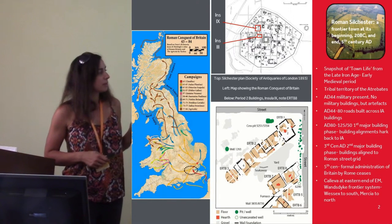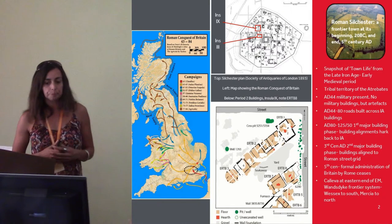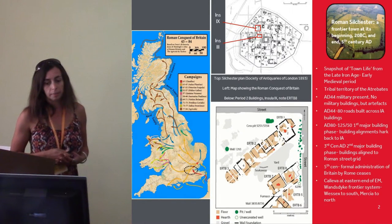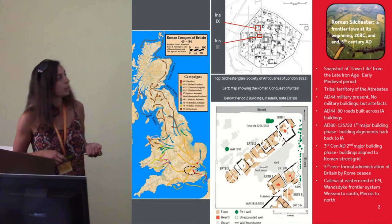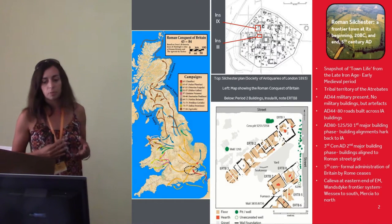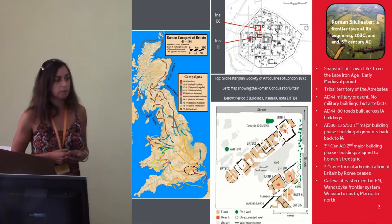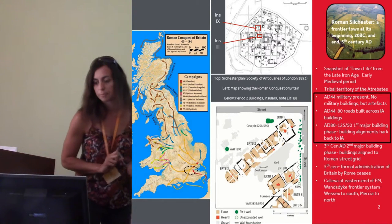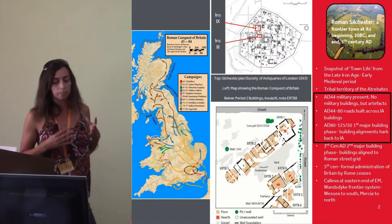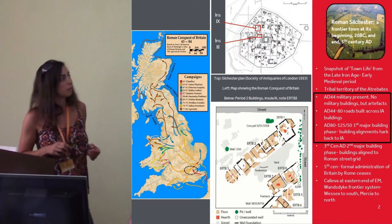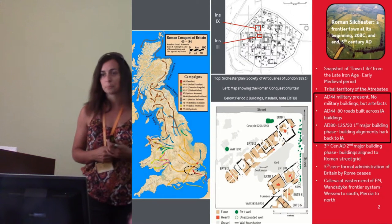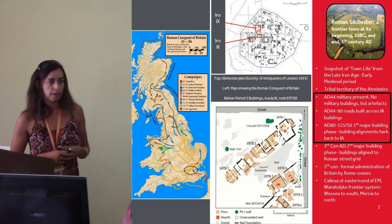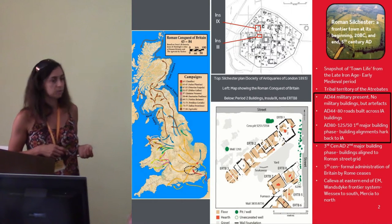This building spans quite a long chronological period, from AD 44, right through when the Iron Age buildings are cut across by the Roman street grid, and also the first major building phase where buildings are built but don't conform to the Roman street grid. So this is a very good case study for looking at issues of acculturation and how people resisted Romanisation.